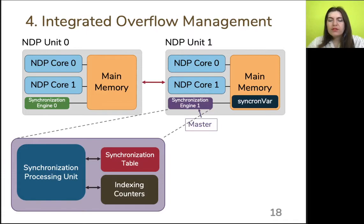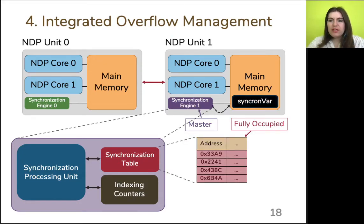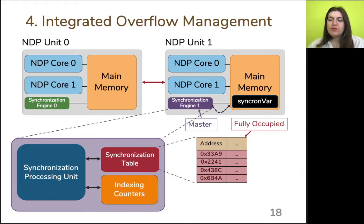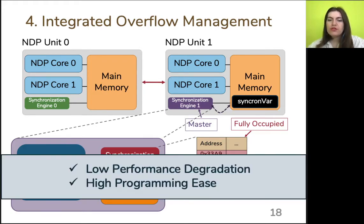Fourth, when hardware synchronization resources are oversubscribed, Synchron integrates a programmer-transparent technique that uses main memory as a fallback solution. If the proposed synchronization table overflows, the master synchronization engine issues read or write requests to the synchronization variable to handle synchronization via main memory. Inside the synchronization engine, a set of counters indexed by the address of a synchronization variable indicates if a specific variable is currently serviced through main memory or not. The proposed integrated hardware-only overflow scheme effectively limits performance degradation under overflow scenarios and provides high programming ease since overflow scenarios are handled in a programmer-transparent manner.